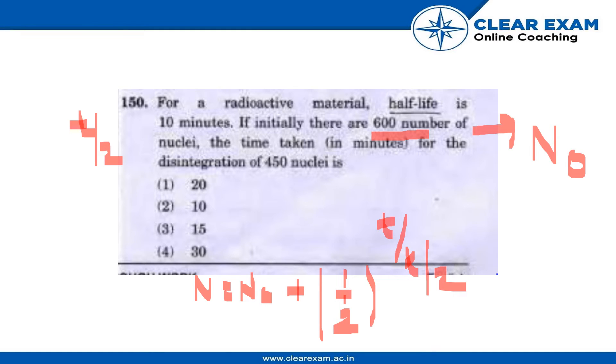And now for the disintegration of 450 nuclei, we need to calculate. For the disintegration of 450 nuclei, the remaining number will be the value of N. Now we have to find the value of N.